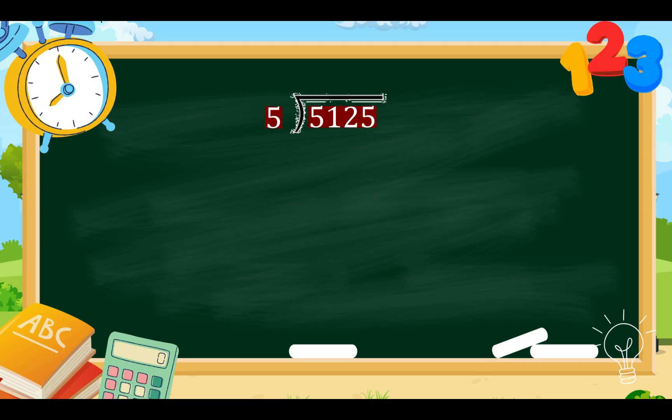One last number. Let's divide 5,125 divided by 5. Now, let's do it all together. The highest place value is number 5,000. Now, 5 divided by 5. We have 1. We have 1. Multiply. 1 times 5 equals 5. Subtract. 5 minus 5 equals 0. Bring down 1. Repeat.